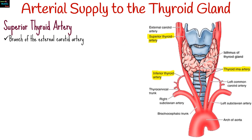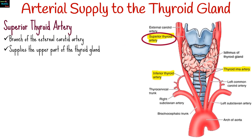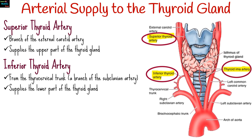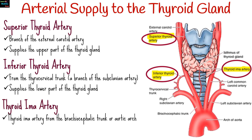The arterial supply of the thyroid gland includes the superior thyroid artery, which is a branch of the external carotid artery and supplies the upper part of the thyroid gland. The inferior thyroid artery arises from the thyrocervical trunk, a branch of the subclavian artery, and supplies the lower part of the thyroid gland. In some individuals, a small artery known as the thyroid ima artery may arise from the brachiocephalic trunk or aortic arch, supplying the isthmus.